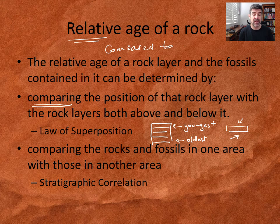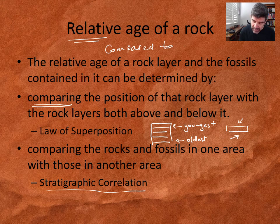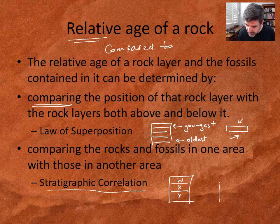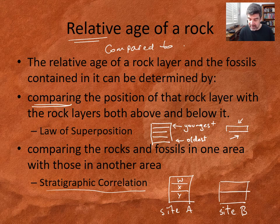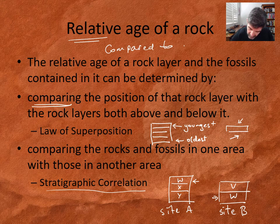The other thing we can do is compare rocks and fossils in one area with those in another area. By looking at the sequences, we get a sense of whether rocks are of a similar age and perhaps were laid down at about the same time in geological history. This is a process known as stratigraphic correlation. It's designed to say if you have a couple of layers — W, X, and Y, for example, at site A — and over here at site B you can see layers V and W, and W contains the same rock and the same fossils as W in site A, therefore we can correlate these and say they must be of a similar age, laid down about the same time — the same relative age.